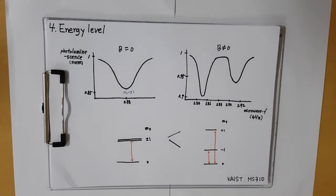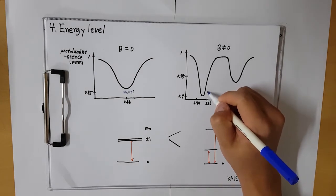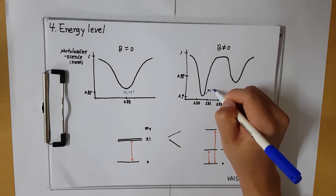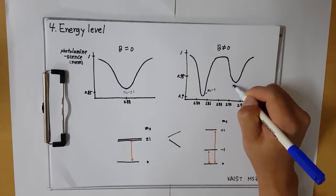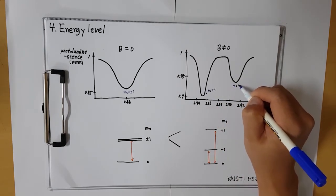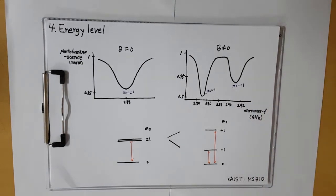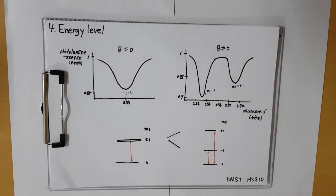Therefore, two lowest points are observed in the graph. Each lowest point indicates ms plus 1 and ms minus 1. The lowest point that indicates ms plus 1 has lower frequency than the frequency of microwaves, and those that indicate ms minus 1 has higher frequency than the microwaves frequency.